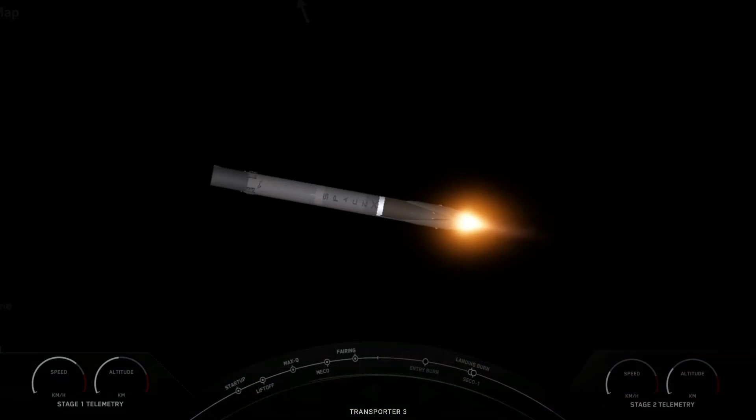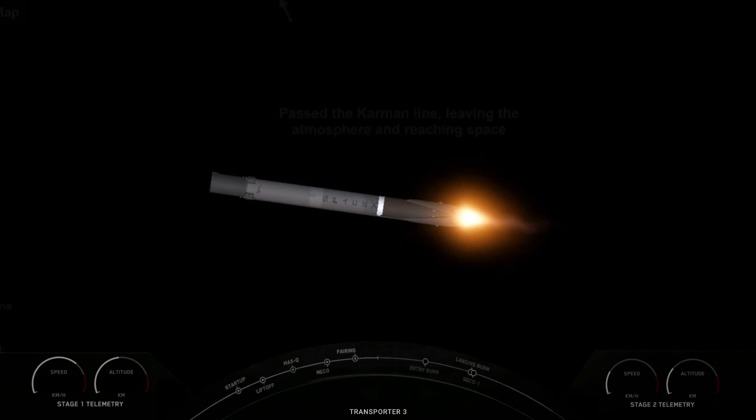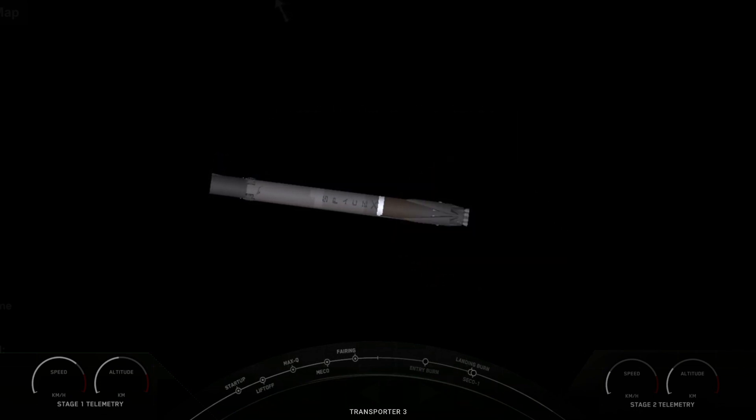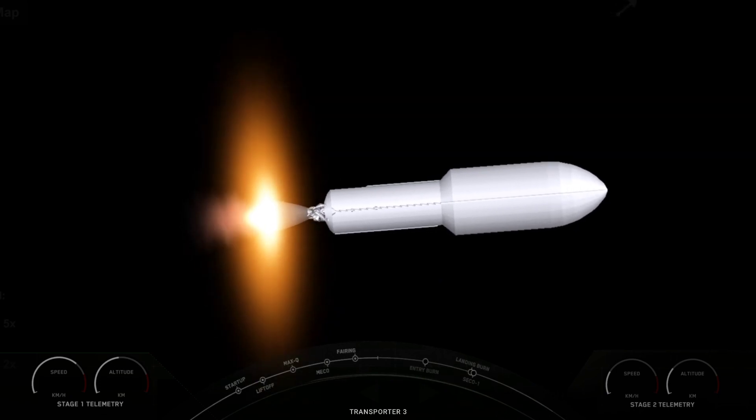Everything looking nominal with second stage trajectory there on the right hand side of your screen. All right, so we heard the call out that the boost back burn has concluded. That was the first of three burns that the first stage will perform today, and we can see the grid fins beginning to deploy there on the left hand side of your screen.